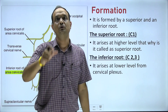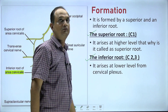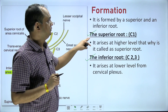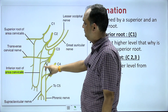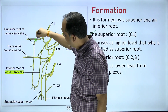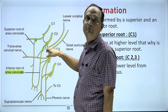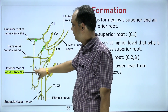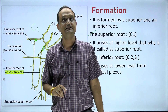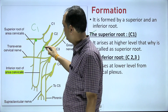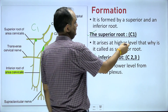Now let's discuss the formation of this loop. Every loop has two parts: these are known as the superior root and inferior root of the ansa cervicalis. The superior root arises at a higher level, and the inferior root arises at a comparatively lower level. The superior root of ansa cervicalis comes from the C1 nerve — so the root value of the superior root is C1. The root value of the inferior root is C2 and C3.